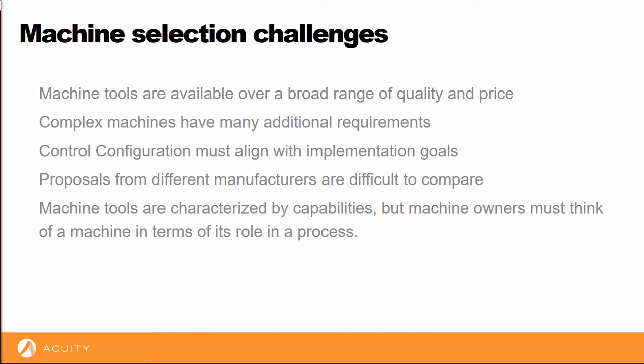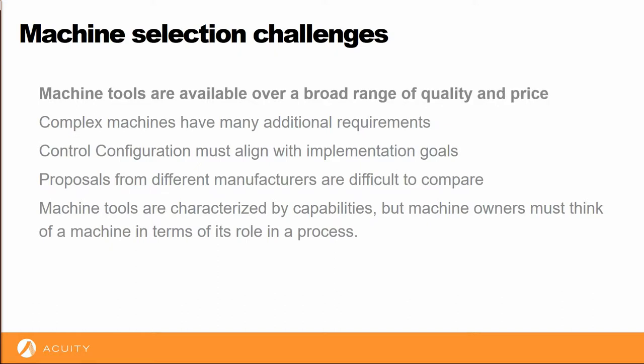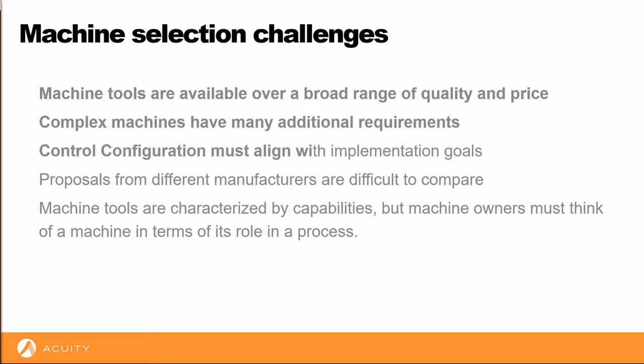A search for machine tools for a given purpose can return candidates over a broad range of price and quality. The claims made by machine tool vendors are not always accurate. The purchase of a machine alone will likely not represent a complete implementation. You may need a power conditioner, concrete work, or even a coolant chiller. The ancillary expenses need to be considered in the decision. Machine controls can be customized to provide useful programming options. It's important to align these options with the objectives. These options are often expensive and they are not all required.